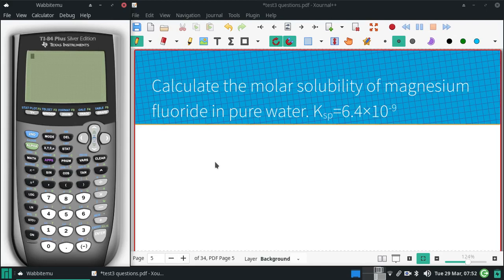Calculate the molar solubility of magnesium fluoride in pure water given Ksp of 6.4 times 10 to the negative 9th. Alright.